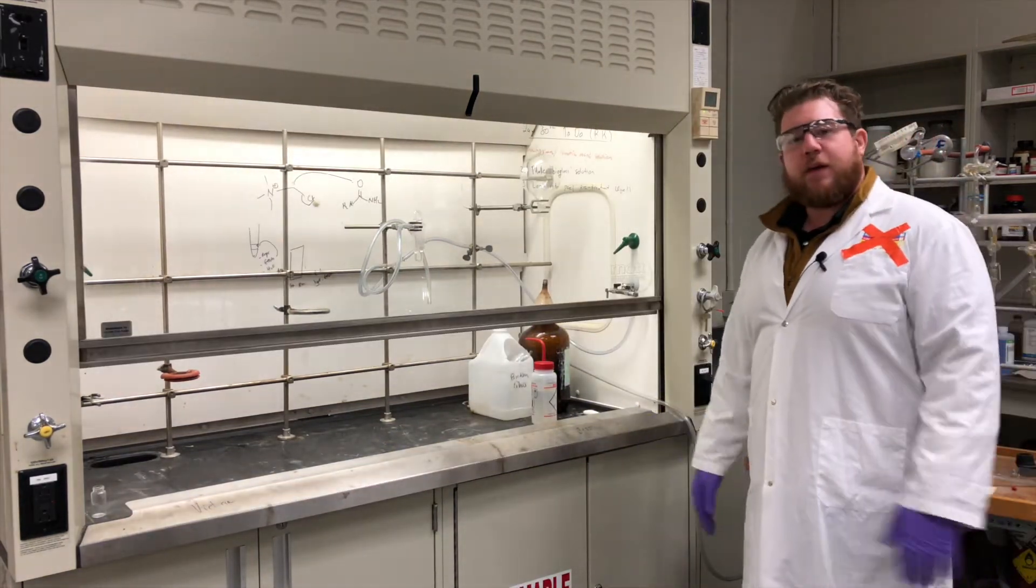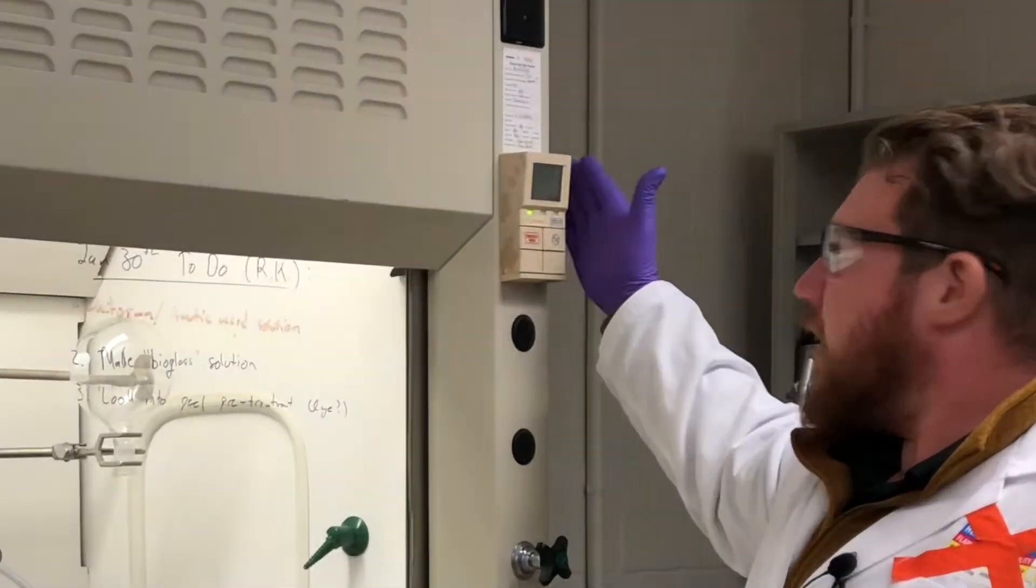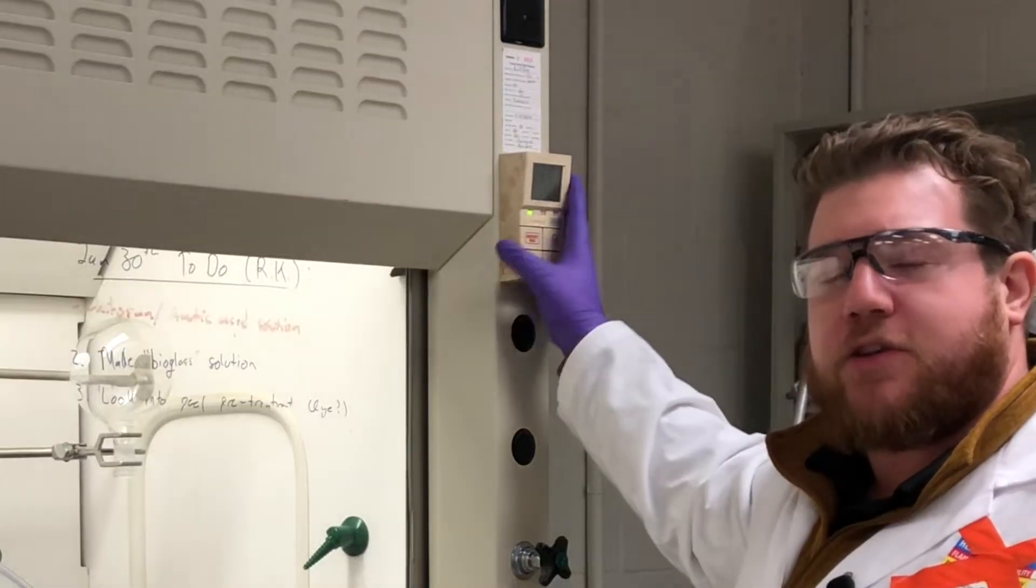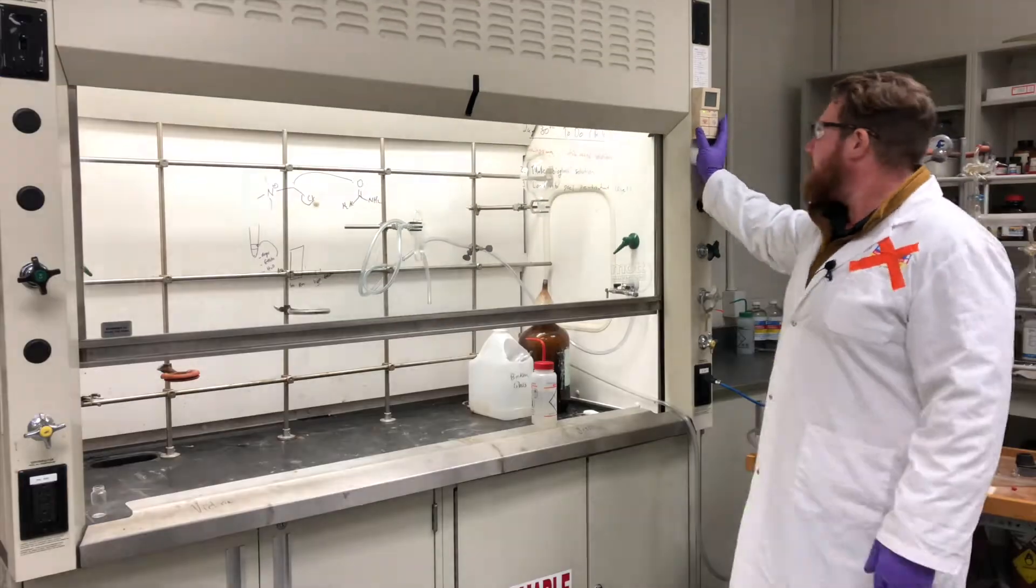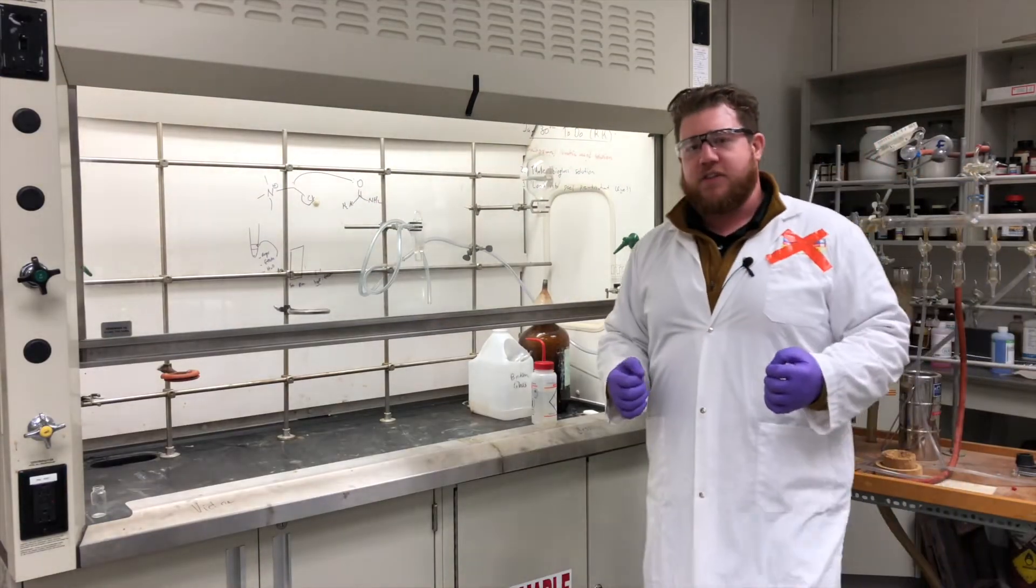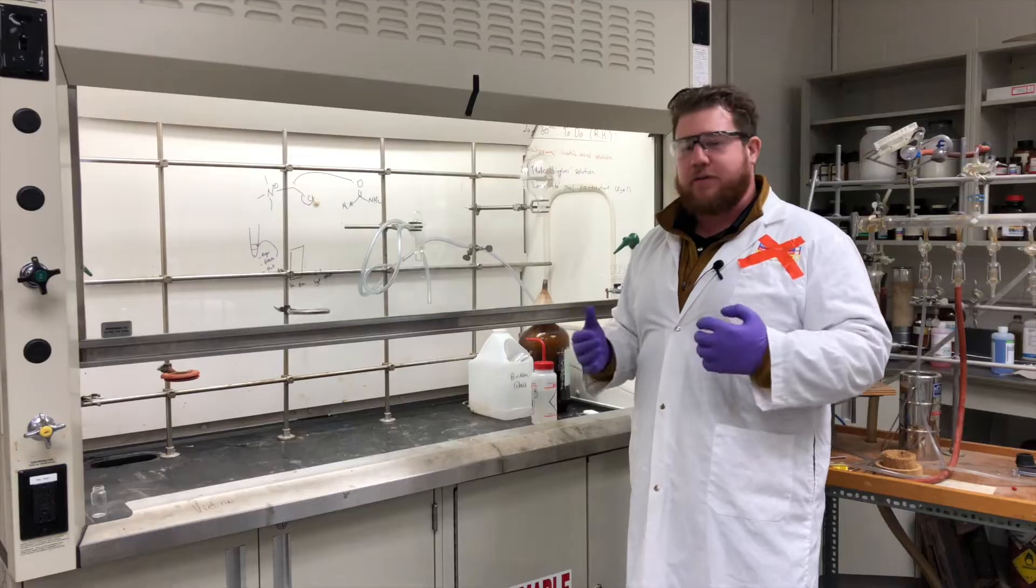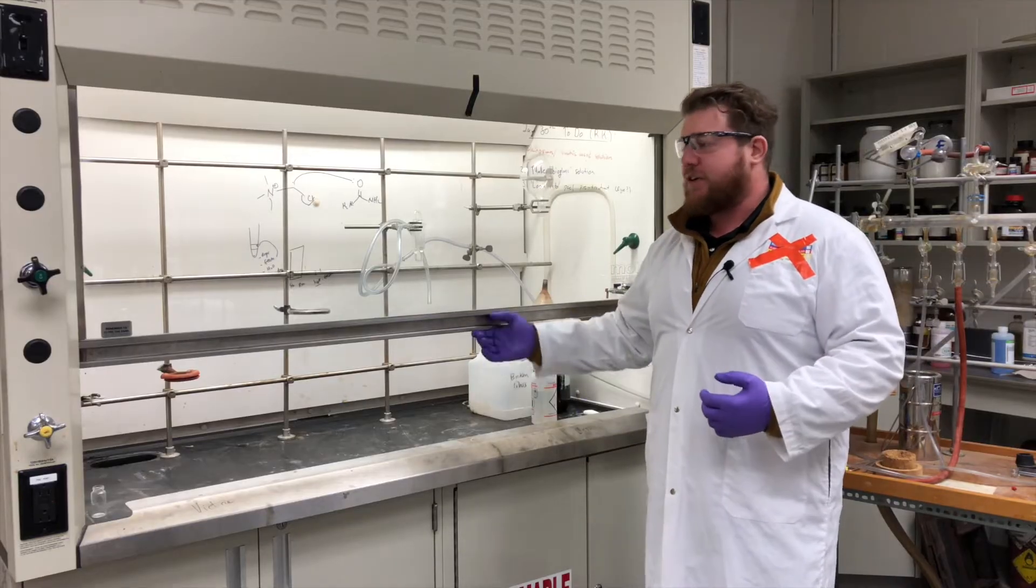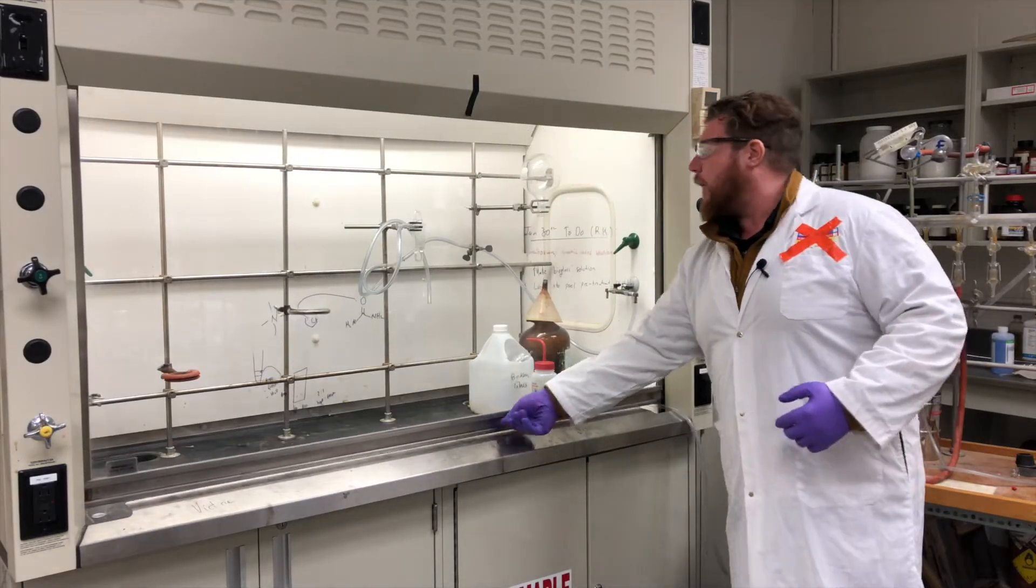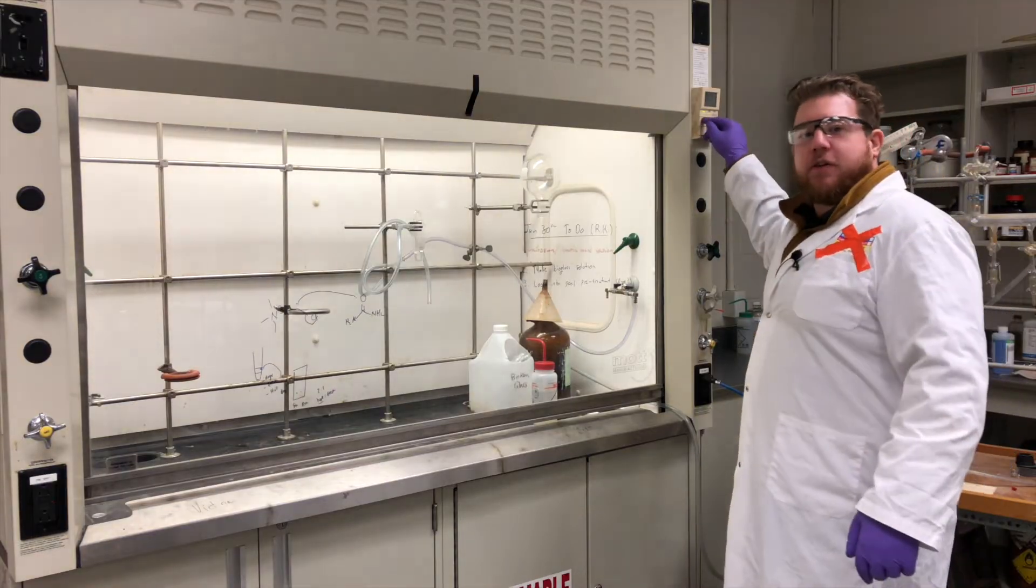So it's very important that whenever you're working with a fume hood, that you check your airflow meter to make sure you have sufficient airflow through. And if you ever encounter a situation where there starts to be a backdraft, there isn't sufficient airflow, it's very important to close the sash all the way and hit the emergency purge.